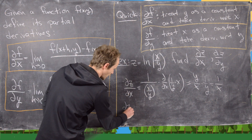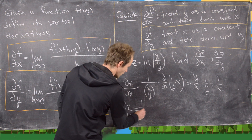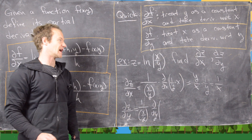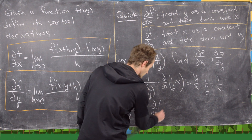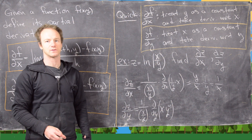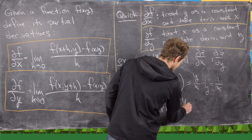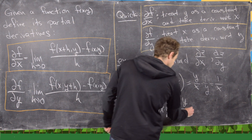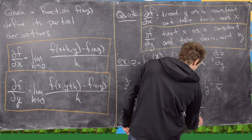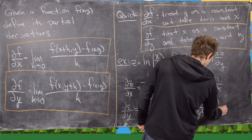Now let's do the partial of z with respect to y. We start the same way: the derivative of the natural log gives 1 over (x/y). Then we take the derivative with respect to y of the inside function x/y, which I'll write as x times y to the minus 1. Thinking of x as the coefficient, we apply the power rule: the derivative of y to the minus 1 is minus 1 times y to the minus 2, or minus 1 over y squared. So we get (y/x) times x times (minus 1/y squared), which simplifies to minus 1/y.